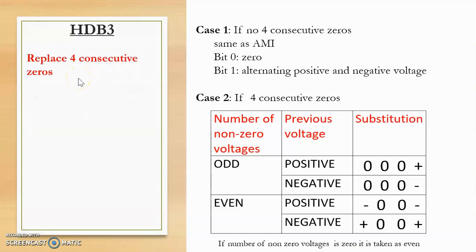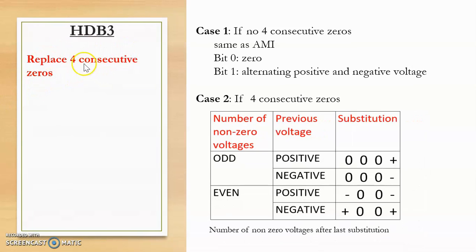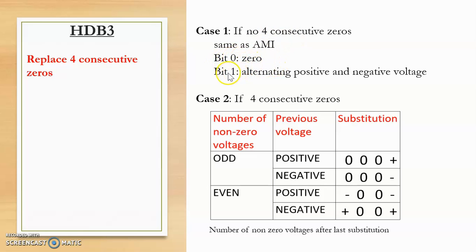HDB3 stands for High Density Bipolar of Order 3, and it is used to replace 4 consecutive zeros. Since HDB3 is used to replace 4 consecutive zeros, we first need to check whether there are 4 consecutive zeros or not. If there are no 4 consecutive zeros, the encoding will be the same as AMI: if the bit is 0 it will be at 0 voltage, and if the bit is 1 it will use alternating positive and negative voltages.